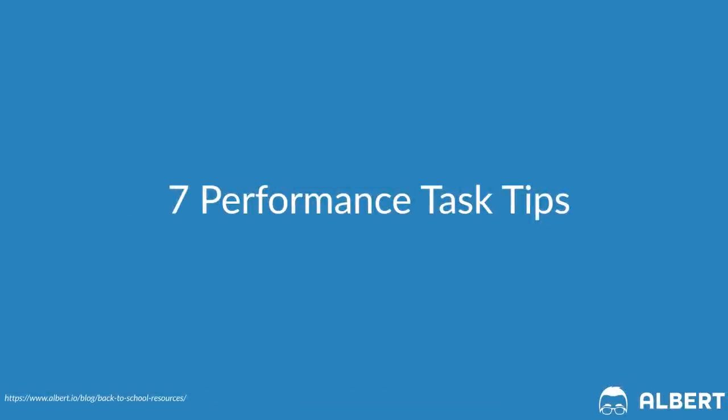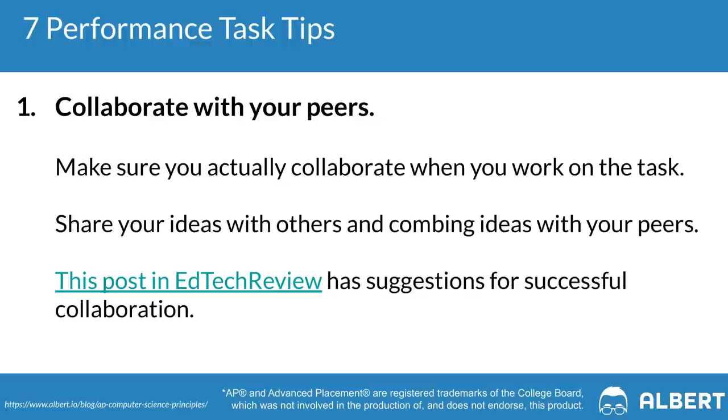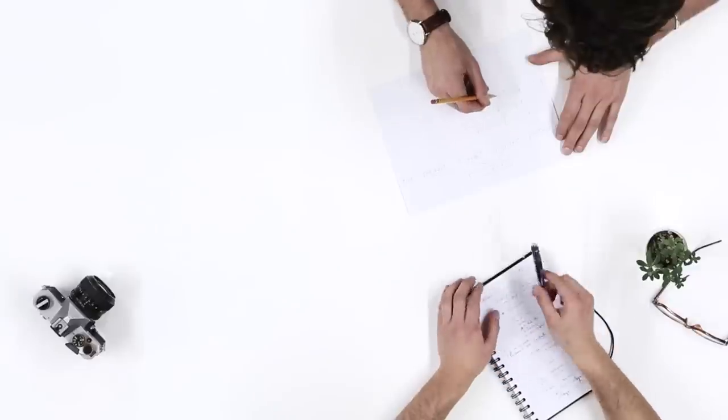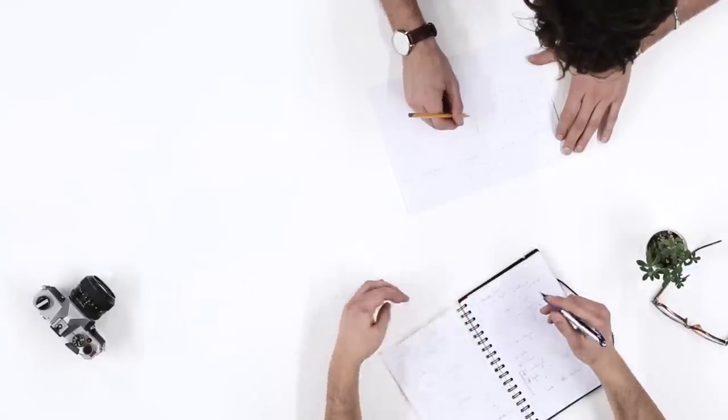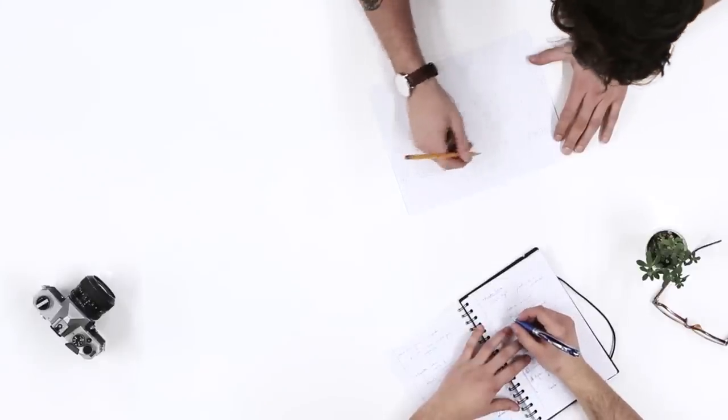Now that we've covered four tips for the multiple choice section, let's transition to seven tips to help you do well on your performance task. The first tip is to make sure that you're comfortable collaborating with your peers. Oftentimes your performance task is going to be connected to some sort of collaborative work you've already done in class. By collaborating with your peers, you can discover new potential ideas or perspectives that you personally may not have had.